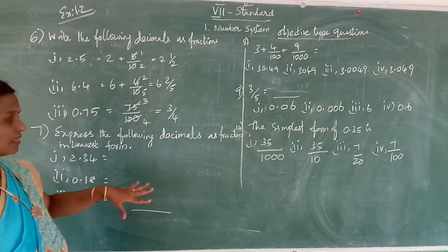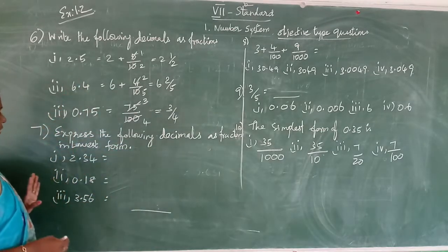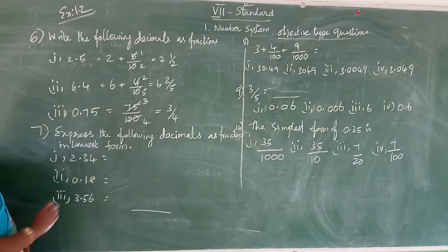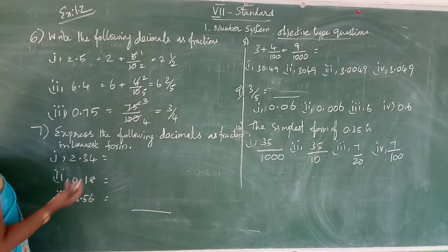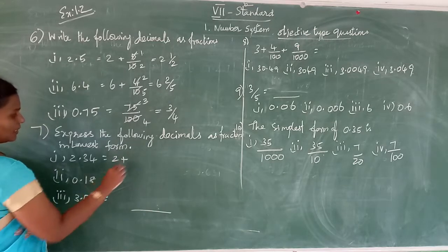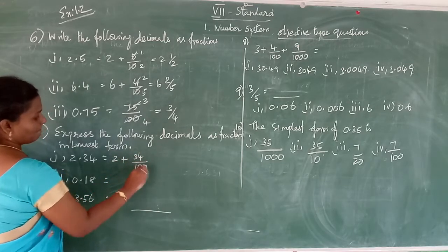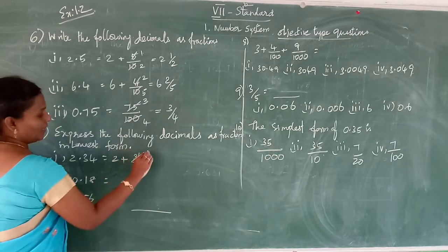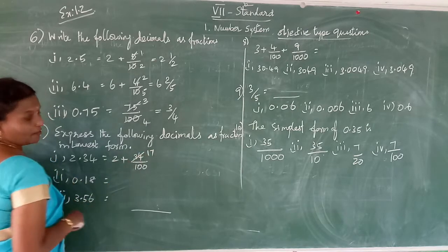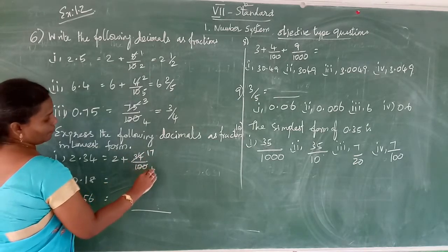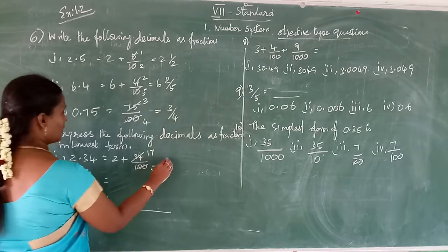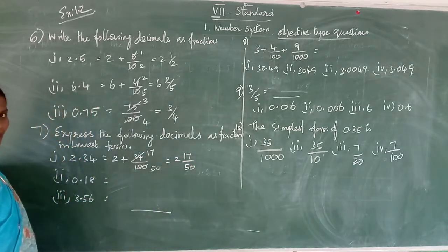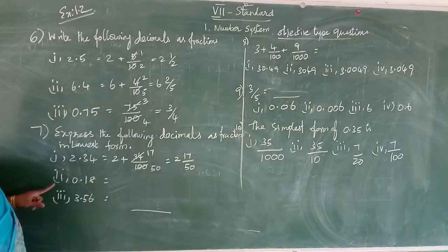Seventh question: express as a fraction in lowest form. See: 2.34. Write as 2 plus 34 by 100. Cancel with the 2 times table: 34 divided by 2 is 17, 100 divided by 2 is 50. This gives 2 and 17 by 50.